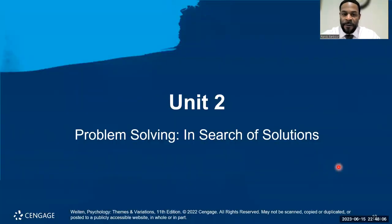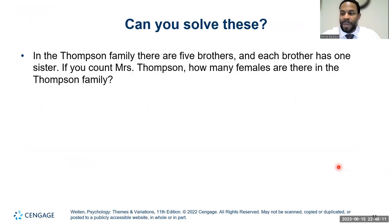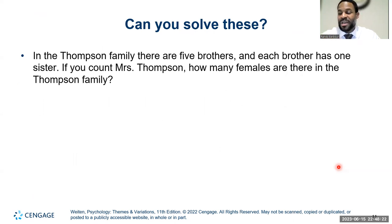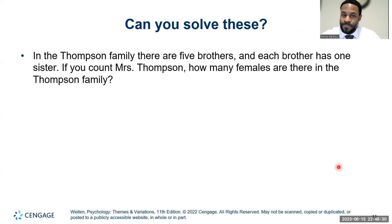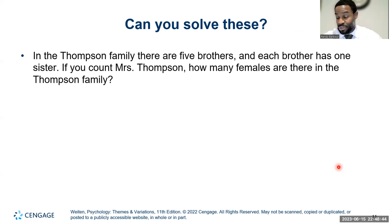Now for unit two: problem solving — the search for solutions. Consider this: in the Thompson family there are five brothers and each brother has one sister. If you count Mrs. Thompson, how many females are in the Thompson family? Think through what information is relevant and what is irrelevant before answering.